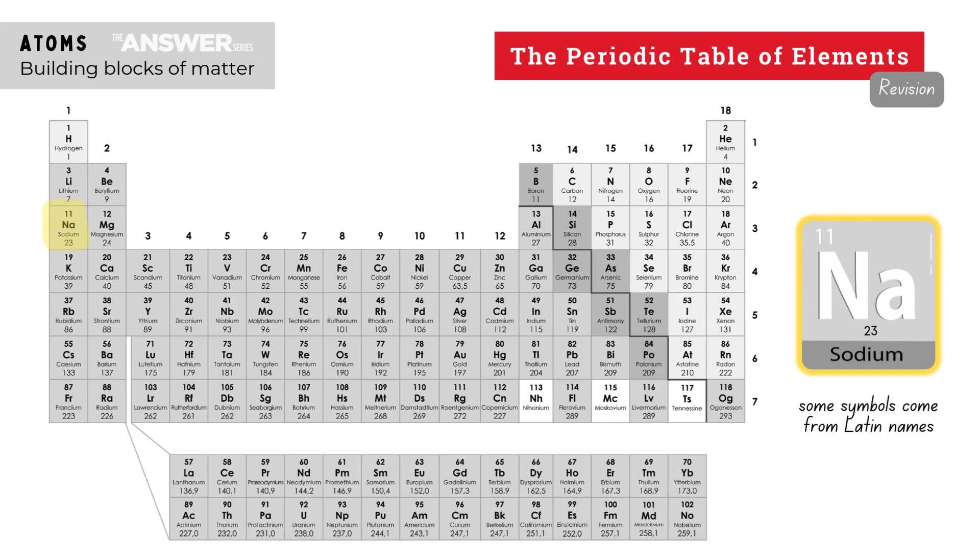Some chemical symbols are a bit more difficult to understand because their names may come from Latin names. For example, the Na in the symbol of sodium comes from the Latin name for sodium which is natrium.